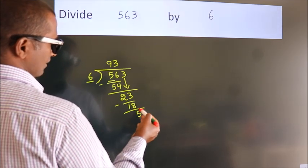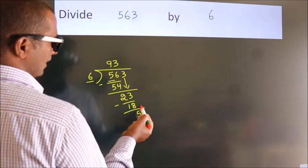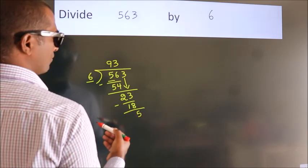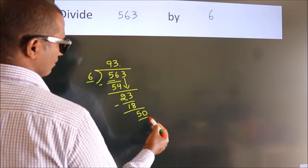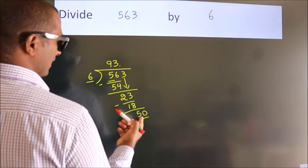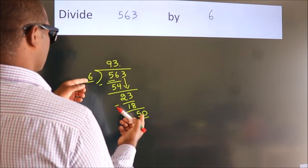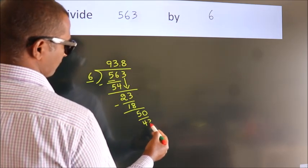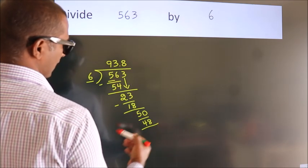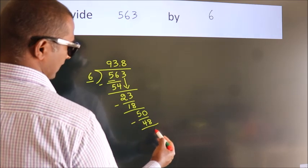After this, no more numbers to bring down. So what we do is we put a dot and take 0. So 50. A number close to 50 in the sixth table is 6 eights 48. Now we subtract. We get 2.